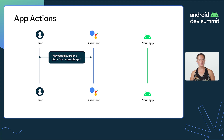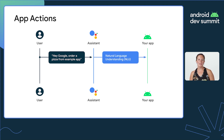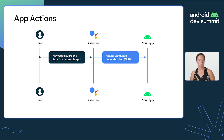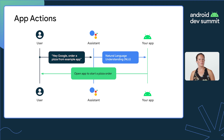When the user says 'Order a pizza from example app,' Google Assistant will process the user's input using Natural Language Understanding, or NLU for short. Assistant will figure out what the user wants to do. Then the app is triggered with the user-defined data and opens to the appropriate app feature to start a pizza order.